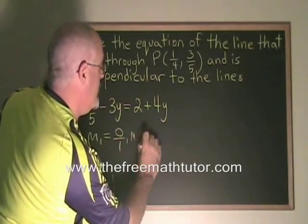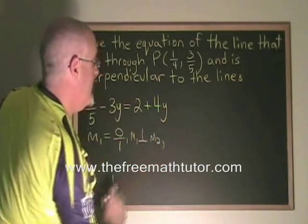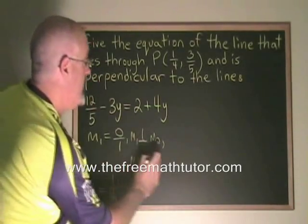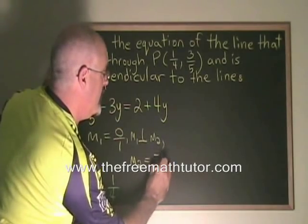M1 is perpendicular to M2. Therefore, M2 must be equal to the negative reciprocal of 0 over 1, which is negative 1 over 0.